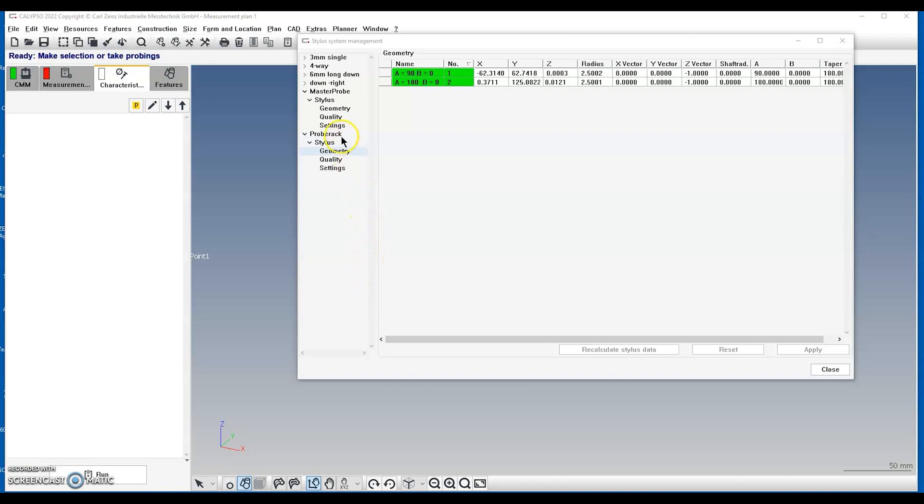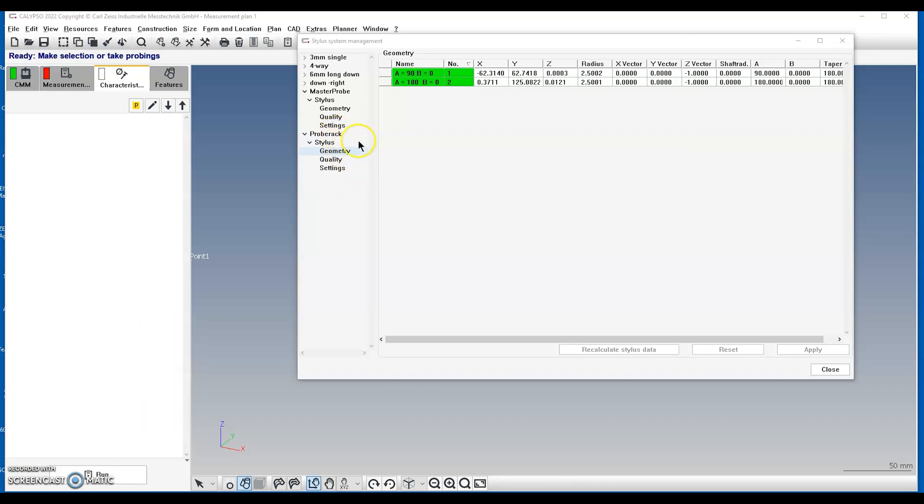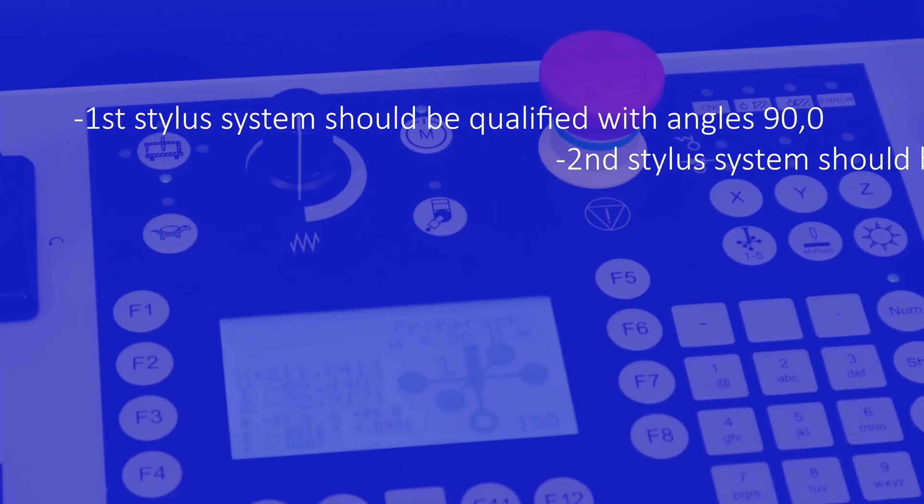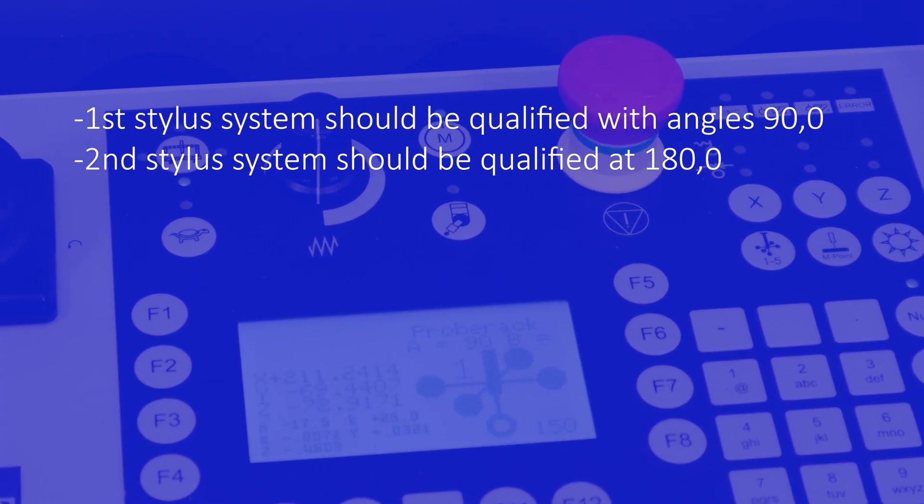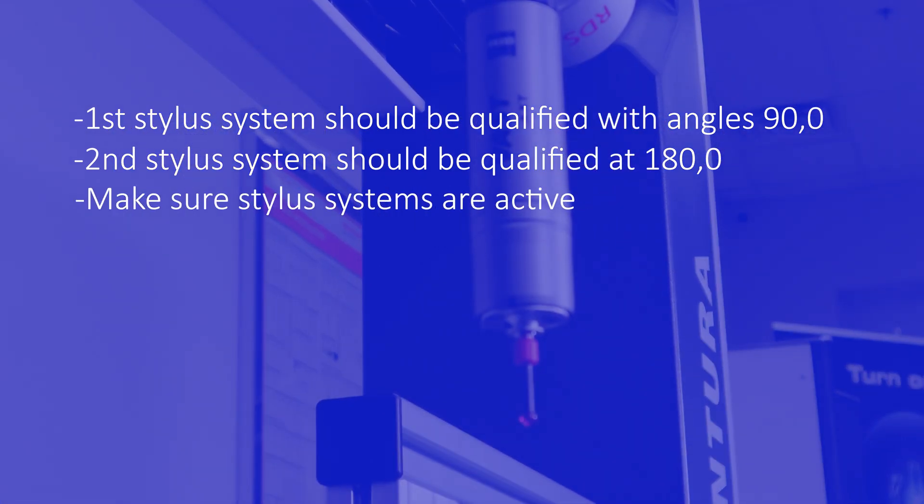To begin, create a stylus system with the master probe and give it a name, such as Pro Rack. The first stylus in the system should be qualified with the angles 90 and 0. The second stylus should be qualified with the angles 180 and 0. Make sure the stylus systems you create are active.